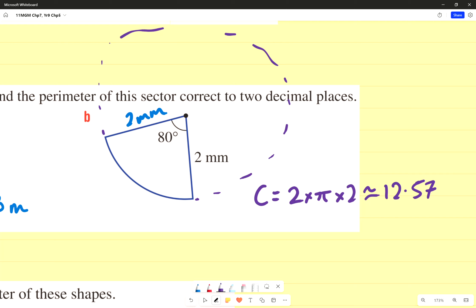Perfect. So I'm going to go 12.57 times 80 over 360. Please make sure you're copying this down as well. Put that in your calculator.